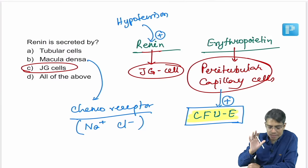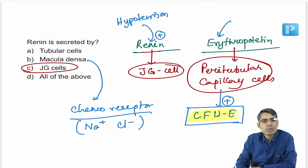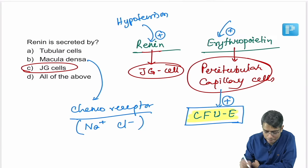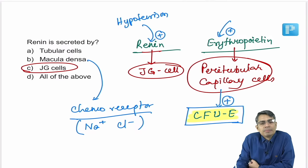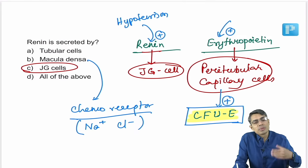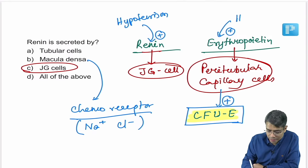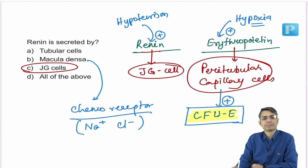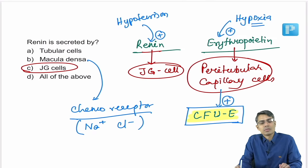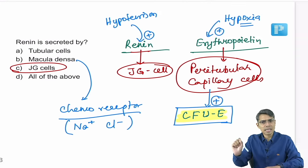The stimulus for erythropoietin secretion is hypoxia — for example, at high altitude. Hypotension stimulates renin; hypoxia stimulates erythropoietin. Erythropoietin increases RBC count by stimulating colony-forming unit erythroblast.